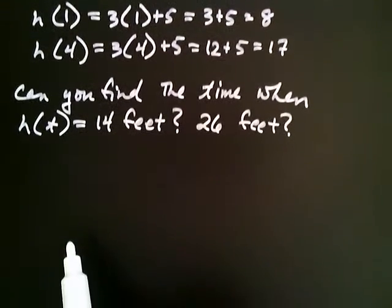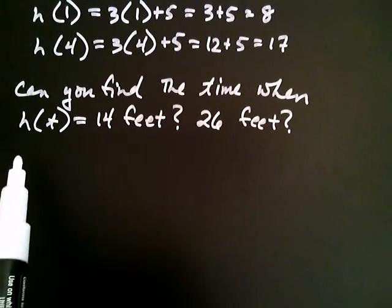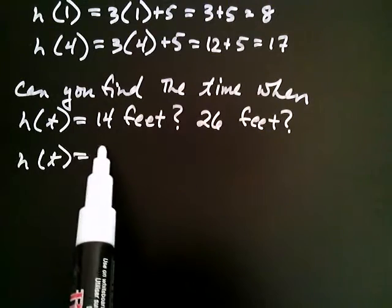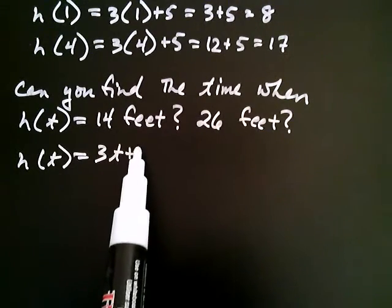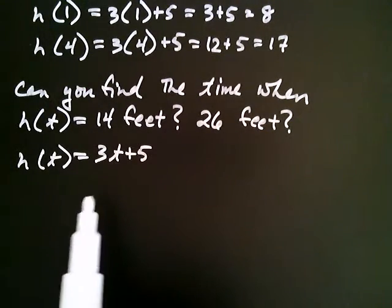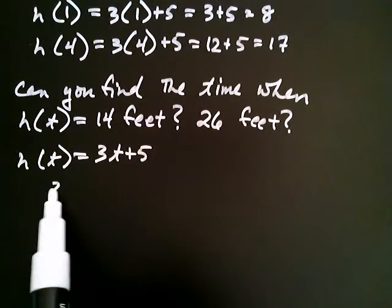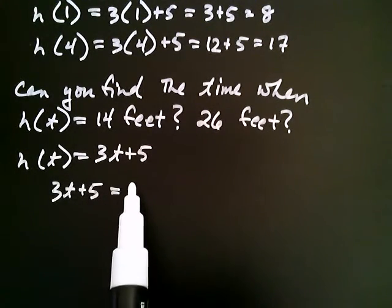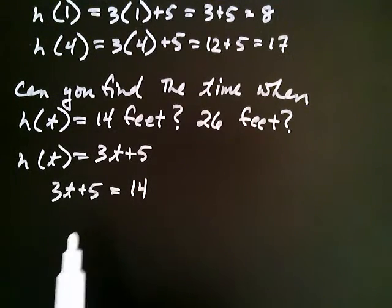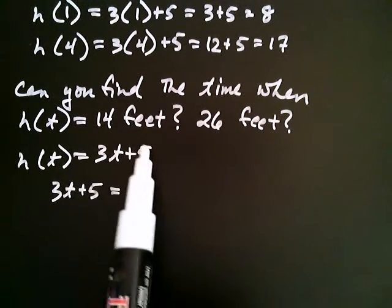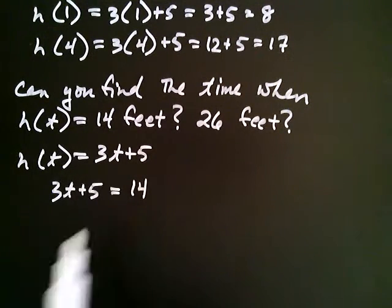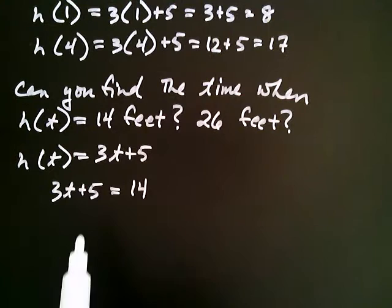What's our rule for getting the height? Well, the rule is this: the height at any time is always three times that time added to five. So we want to know, when is three times a certain time added to five equal to 14? We took the expression that always gives us the height, 3t plus 5, and we set it equal to the height we were looking for.